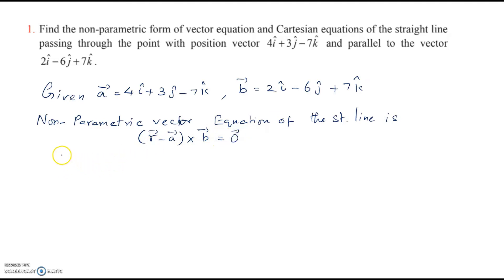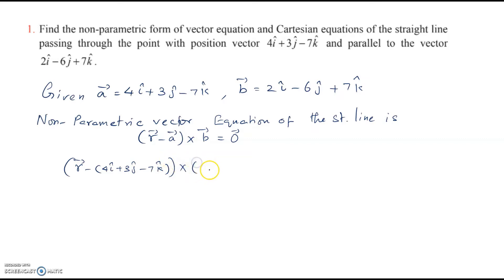Replacing a and b, we get: (r − (4i + 3j − 7k)) × (2i − 6j + 7k) = 0. This is our non-parametric form of the vector equation.